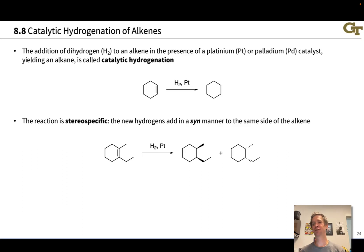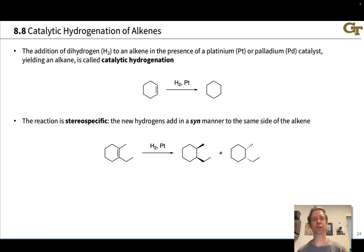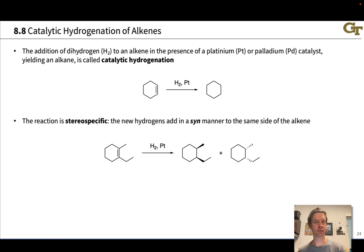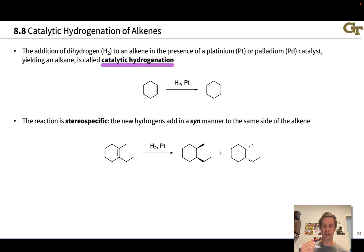Conversion of an alkene into an alkane corresponds to the addition of the elements of dihydrogen to the alkene. This is most typically accomplished using hydrogen gas in the presence of a metal catalyst, most commonly platinum or palladium. This reaction is called catalytic hydrogenation, since we're using a metal catalyst in combination with H₂ and the elements of hydrogen are adding to the alkene.